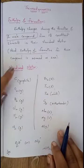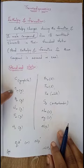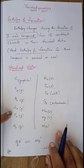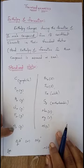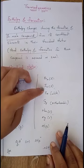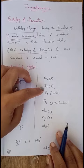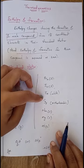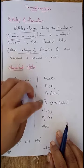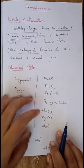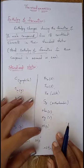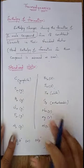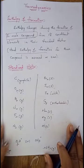Carbon always exists as graphite, oxygen as gas, hydrogen as gas. Chlorine, fluorine, and nitrogen also exist as gas. Bromine and iodine in nature exist as liquid in their standard state. Phosphorus exists in white form, sulfur in orthorhombic state. Sodium, magnesium, aluminum, and other metals exist in solid state. That is about the standard states of different elements.